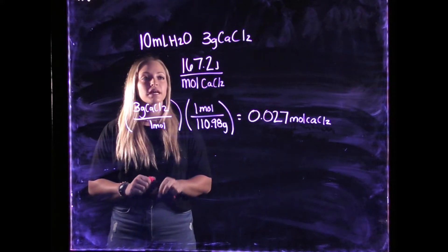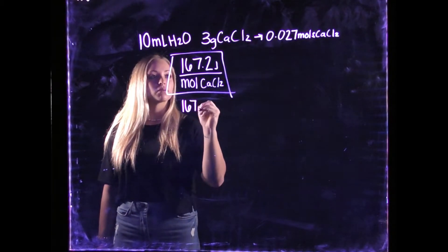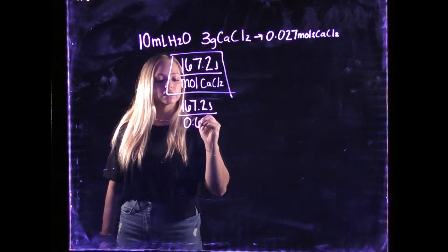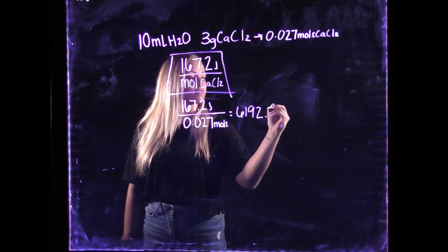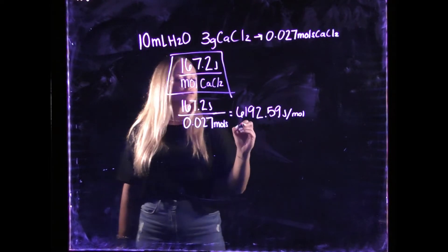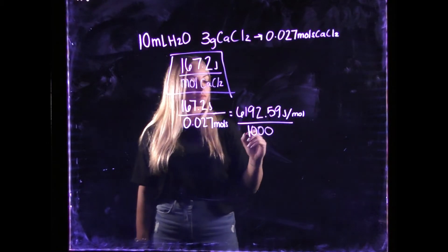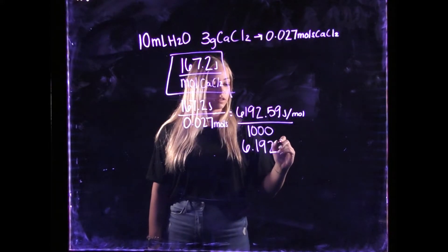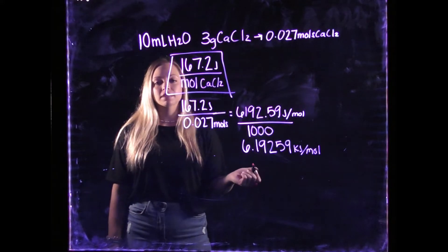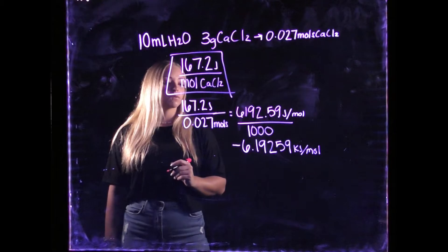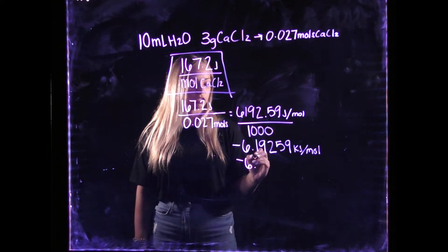Now that we have the moles of CaCl₂, we can divide Q by our moles. So, 167.2 joules divided by 0.027 moles gives us 6192.59 joules per mole. We will divide this by 1,000 to get kilojoules per mole, since that is how it is normally written in the literature. That gives us 6.19259 kilojoules per mole. Our last step is to flip the sign, giving it a negative sign. So our answer is negative 6.19259, which we round to negative 6.2 kilojoules per mole.